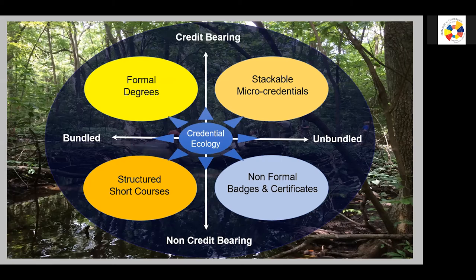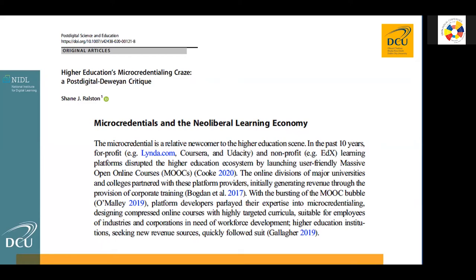None of this exists in a vacuum. This is a recent paper by Shane Ralston about micro-credentials and the neoliberal learning economy. When we're talking about unbundling, we have to consider what we are unbundling, what we're unbundling it for, who we're unbundling it for, and for what purpose. This is a very provocative and good paper that talks about this in detail — that many of these questions and implicit assumptions really need to be questioned when talking about them in the academic sphere and among different stakeholders.